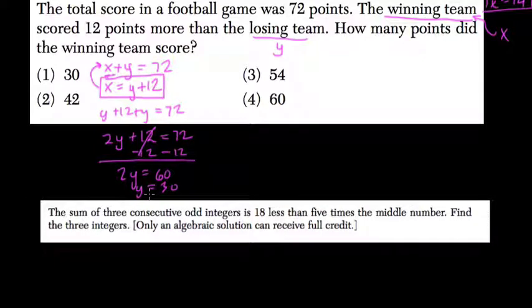So the losing team got 30. They want to know what the winning team is, so we add 12. 30 plus 12 means the winning team got 42 points, or choice 2.